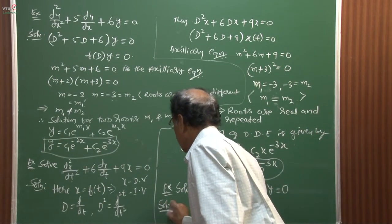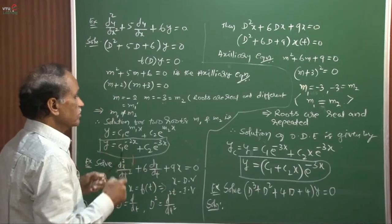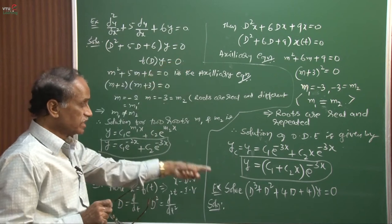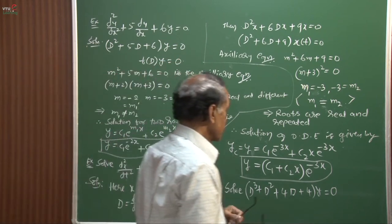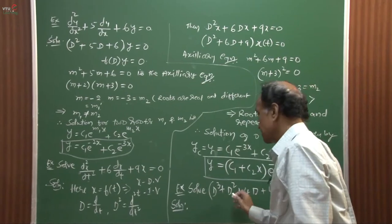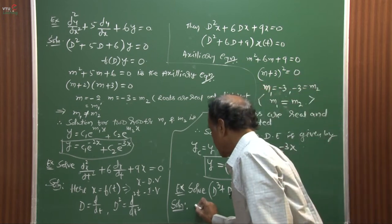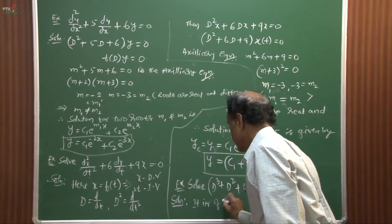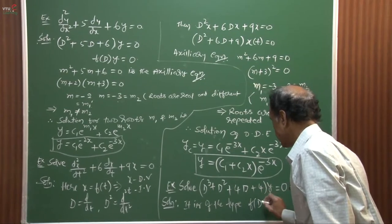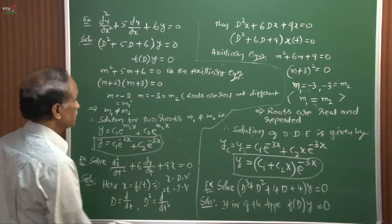In this problem, the highest order derivative is 3 — a third-order differential equation, compared to the previous two which were second order. Let us see what type of roots this problem produces. It is already in the direct format f(D)·y = 0, where the bracketed quantity contains the linear differential operator D.